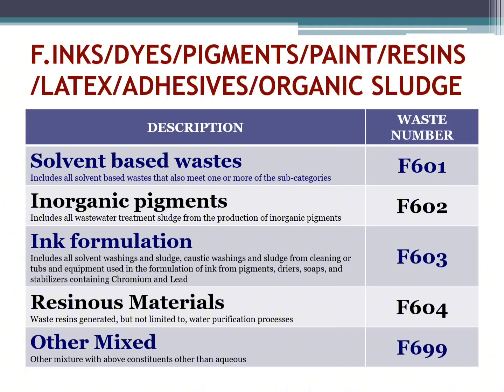Ink formulation: includes all solvent washings and sludge, caustic washings and sludge from cleaning of tubs and equipment used in the formulation of ink pigments, dryers, soaps, stabilizers containing chromium and lead. Waste number F603. Resinous materials: waste resins generated but not limited to water purification processes. Waste number F604.